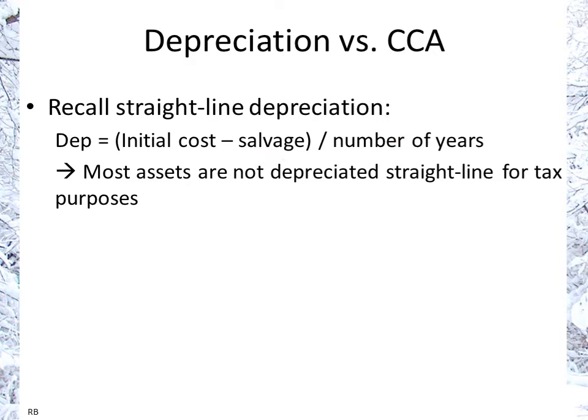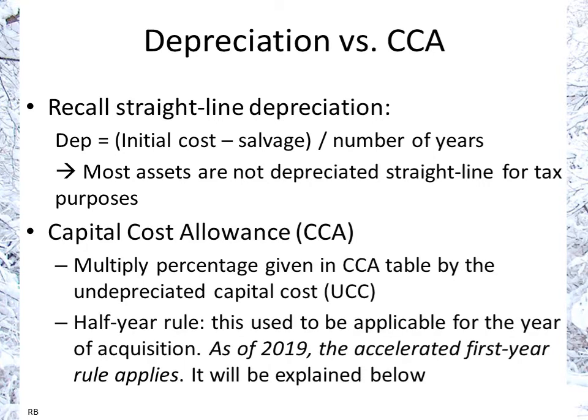The straight-line depreciation calculation is the initial cost minus the salvage value, divided by the number of years. Most assets are not depreciated on a straight-line basis for tax purposes. Instead, you take the percentage given in the CCA table for the given asset class and multiply it by the undepreciated capital cost — basically what's left after previous years' depreciation.